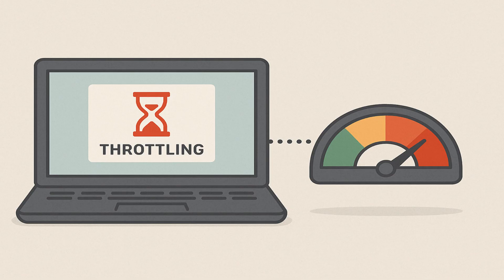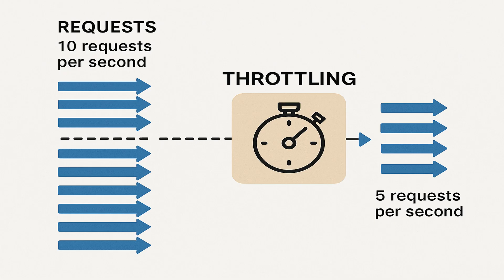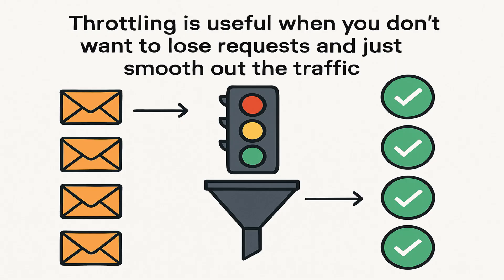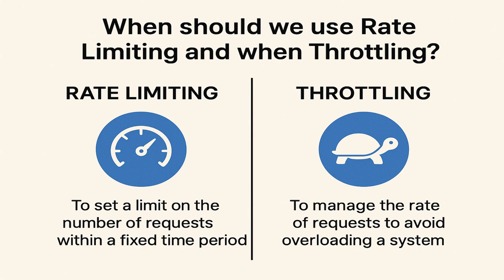Throttling, on the other hand, is more about slowing down requests rather than straightaway rejecting them. For example, if a user is sending 10 requests per second but your service can only handle five, instead of dropping the extra five, throttling can queue or delay them and process them at a controlled speed. The request isn't rejected immediately — it is just held back for a few milliseconds or seconds. Throttling is useful when you do not want to lose requests and just want to smooth out the traffic. Use rate limiting for strict limits on public APIs, and throttling when traffic is bursty but you still want to handle as much as possible. In many systems, both are used together.